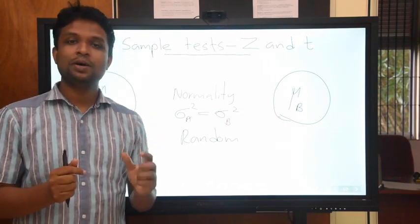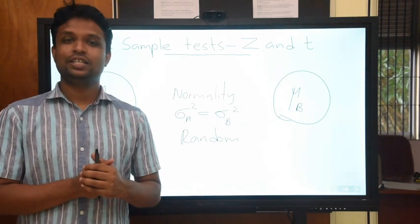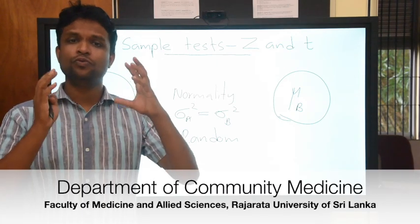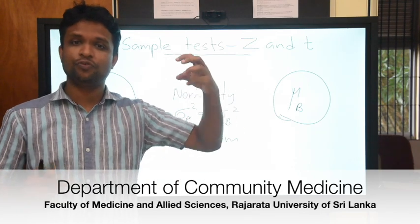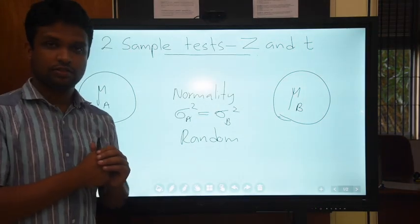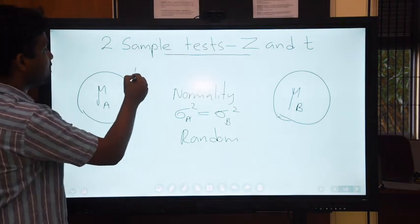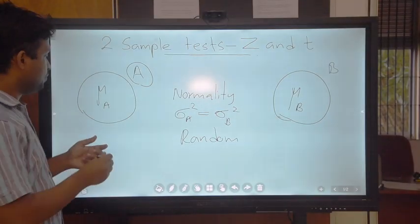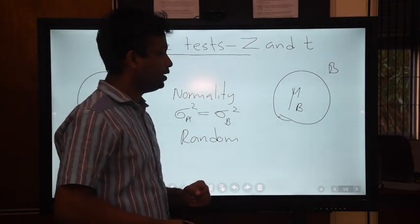Welcome to the lecture on two-sample z-test and two-sample t-test. In the previous lecture we discussed the one-sample test, where we had only one population, took one sample, and compared it against a fixed value. In the two-sample case we have two populations, and we are going to compare the means of two populations. We name them population A and population B, with means mu A and mu B.